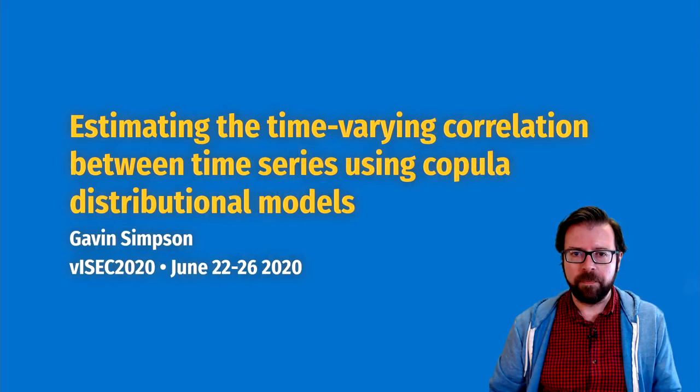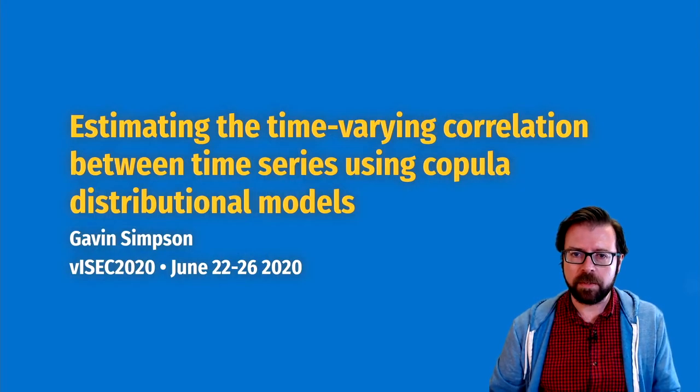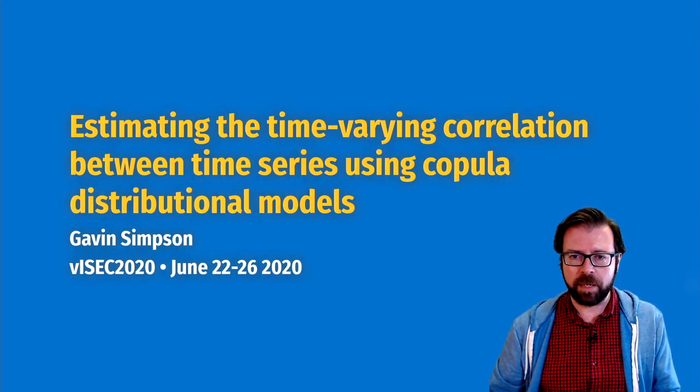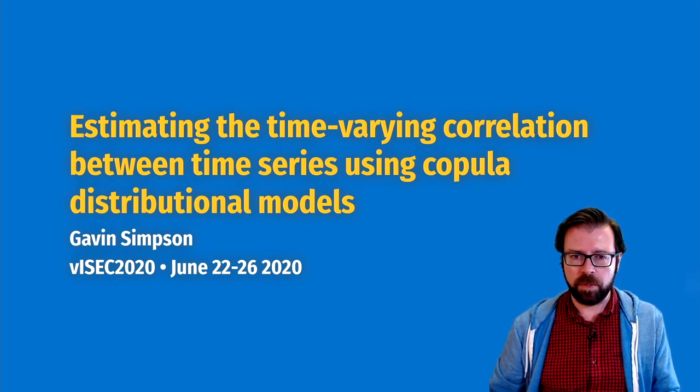Hello, my name is Gavin Simpson and I'm from the University of Regina. Today I'm going to be talking about estimating the time-varying correlation between time series using copula distributional models.